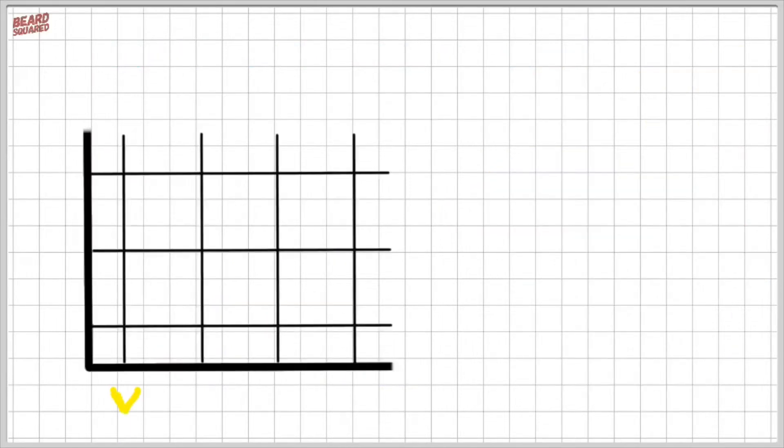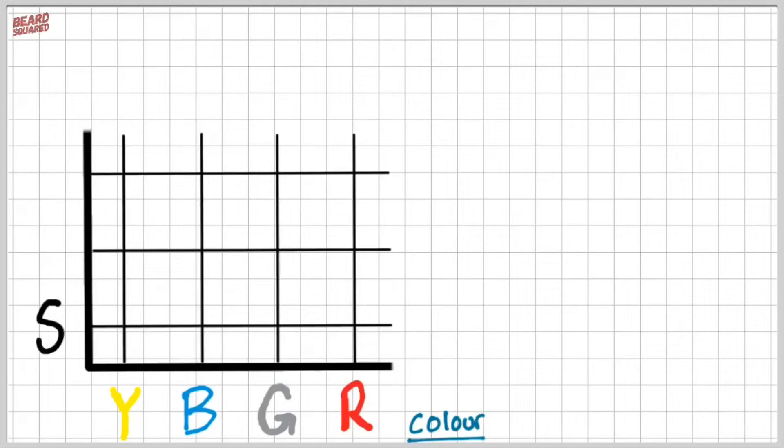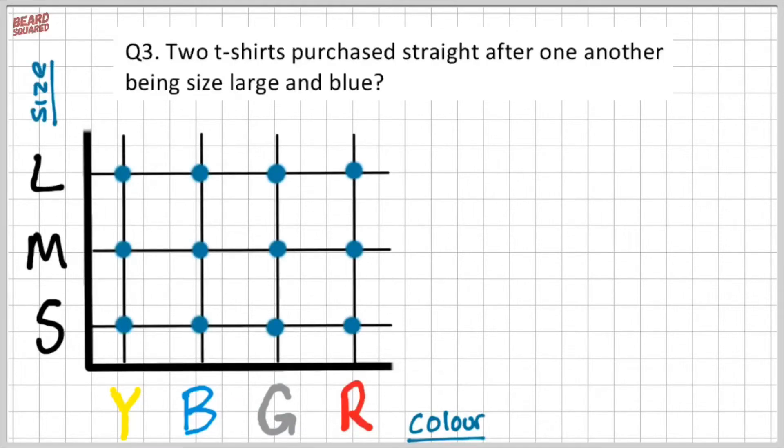Question three, I'm going to use the same sample space. I have yellow, blue, gray, and red at the bottom and small, medium, large along the side. And I want two t-shirts purchased straight one after the other being a size large and blue. So think about this. The probability of a size large blue t-shirt will be this point here. And so that is one out of 12. So the probability of a large blue is one out of 12.